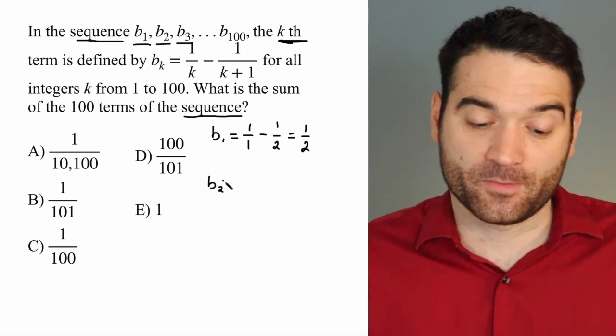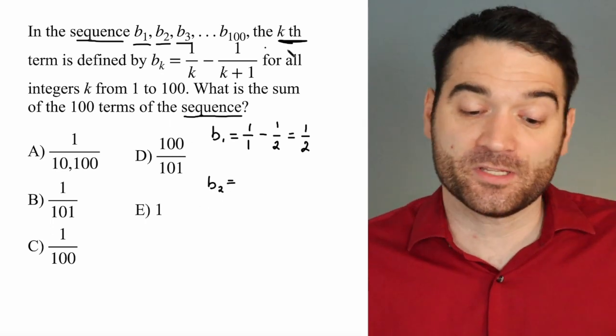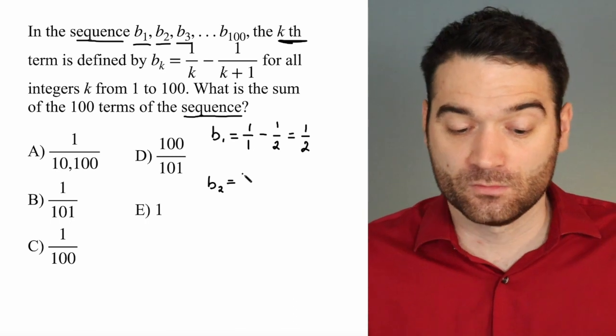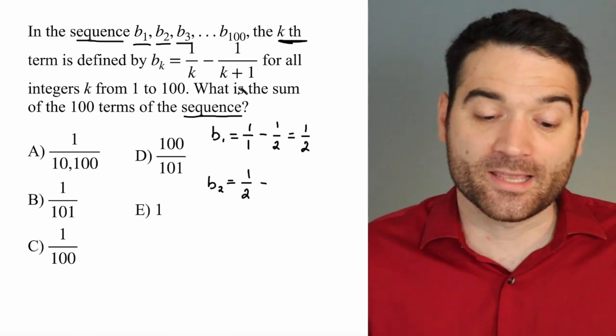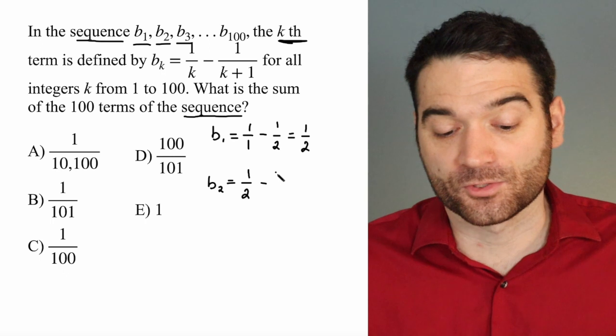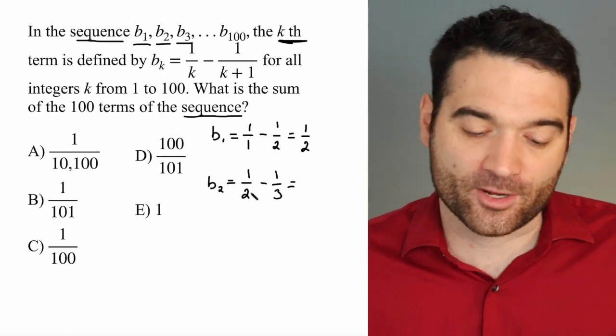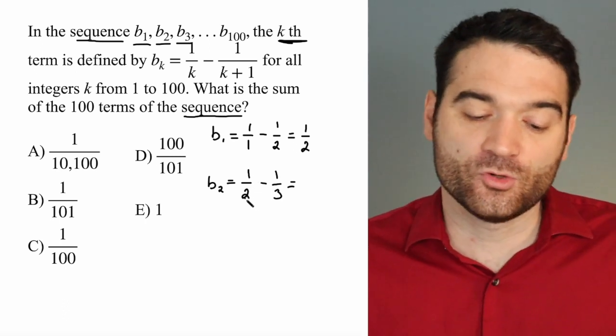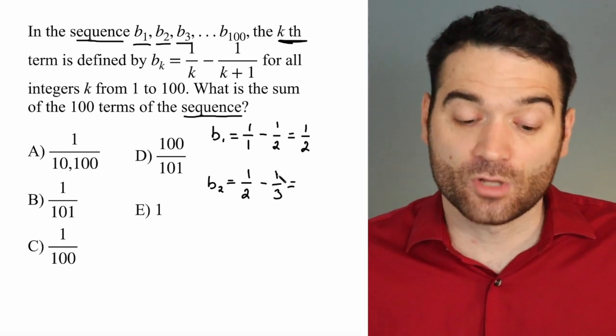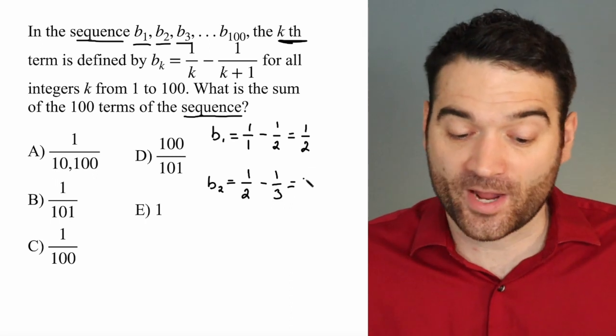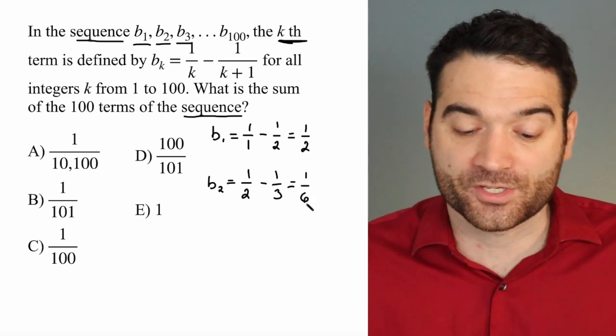What's the second term in the sequence? The second term in the sequence, if k is 2, is 1 over 2 minus 1 over 2 plus 1, also known as 1 over 3. And we got to use a little fraction subtraction here. 1 over 2 is 3 over 6. 1 over 3 is 2 over 6. So if I subtract that out, I get 1 over 6.